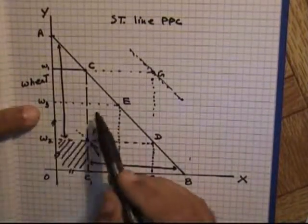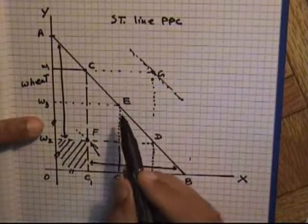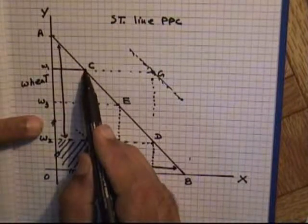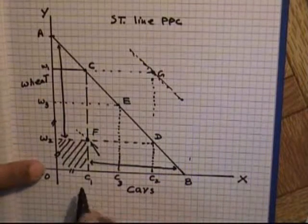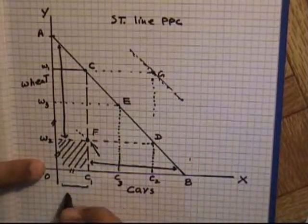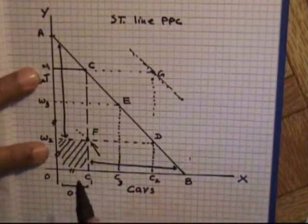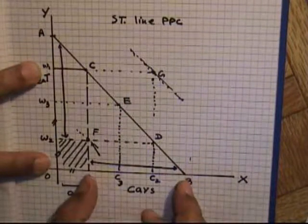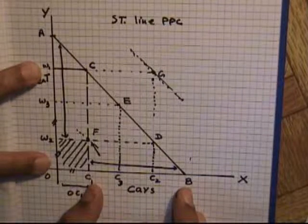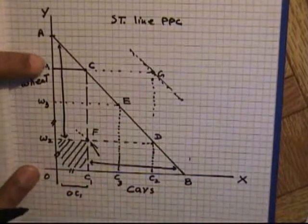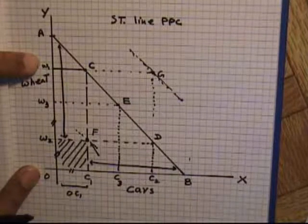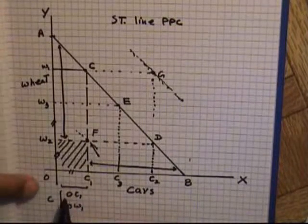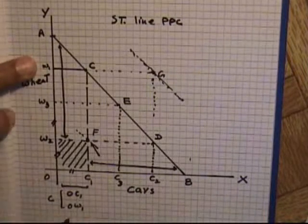Now let us discuss opportunity cost using the curve. At point C, if the country decides to produce OC1 of cars, the remaining resources — which could have produced C1B more cars — are instead engaged in the production of wheat, giving wheat production of OW1. So at point C, production of cars is OC1 and production of wheat is OW1.